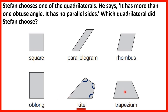So if we look at the trapezium, though it has more than 1 obtuse angle, it has a pair of parallel sides, because these lines, if we extended them, would go on forever and never cross. So Stefan must have chosen the kite.